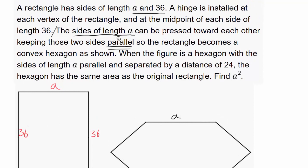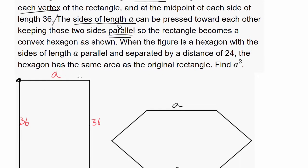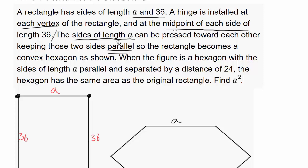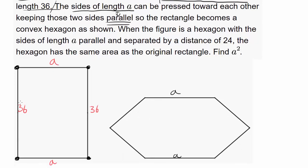And you're installing a hinge at each vertex of the rectangle. So right here, right here, and down below these two. And you're installing them at the midpoint of each side of length 36. It's in the precise middle. That's good to know.